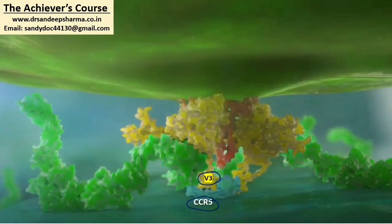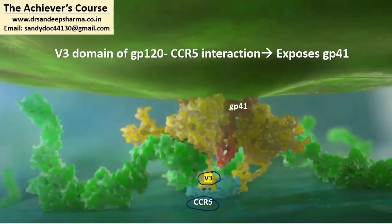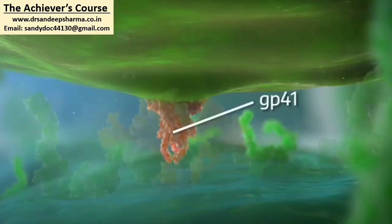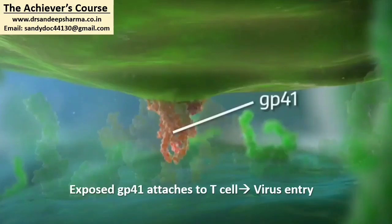This interaction of GP120 V3 with CCR5 now exposes the glycoprotein 41, which was normally hidden. GP41 is now getting exposed, and when this process happens, GP120 itself — its role is over — it starts getting dissolved, leaving only GP41 visible. This exposed GP41 now attaches to the membrane of the T cell and mediates the fusion of the virus molecule with the host T cell.